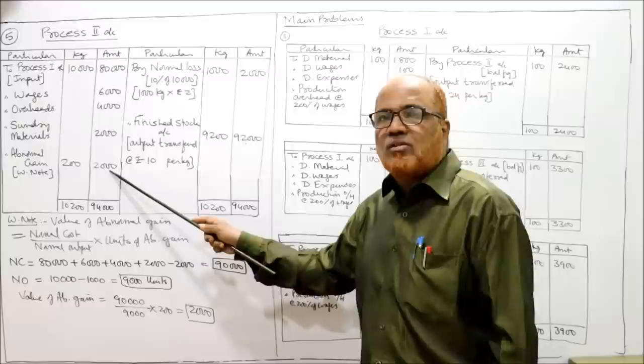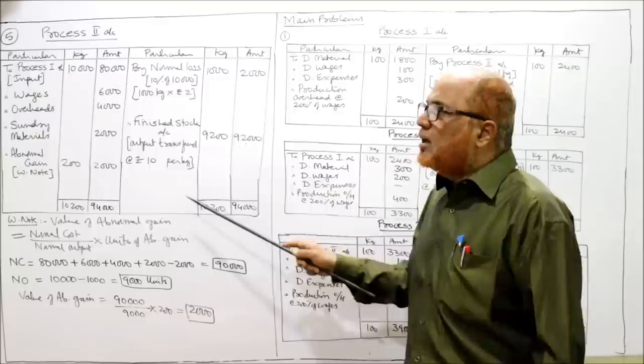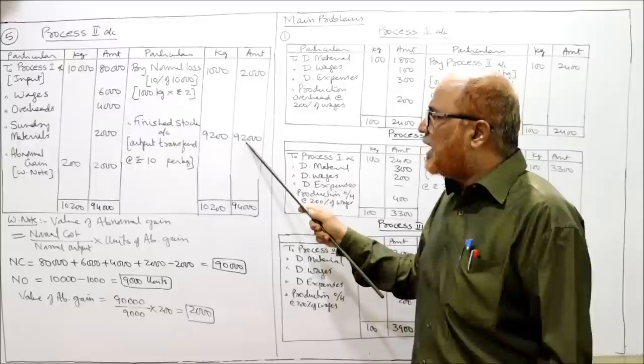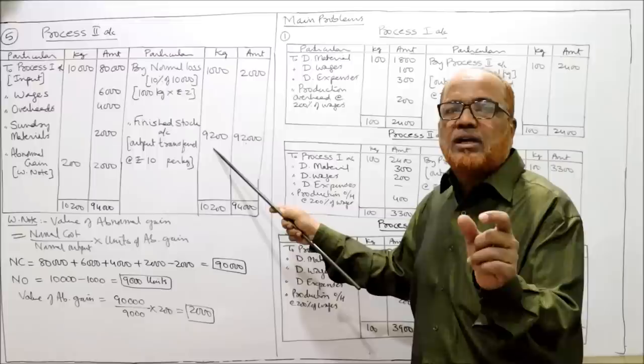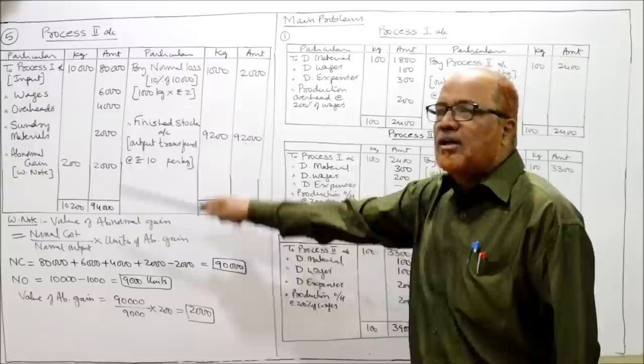Taking the totals: kilogram side — 10,000 + 200 = 10,200; credit side — 1,000 + 9,200 = 10,200. Amount — debit side total is 94,000 minus 2,000 = 92,000 rupees balancing figure. So 92,000 rupees is the total cost for 9,200 kg output. Cost per kg = 92,000 / 9,200 = 10 rupees per kilogram. This completes problem number five.